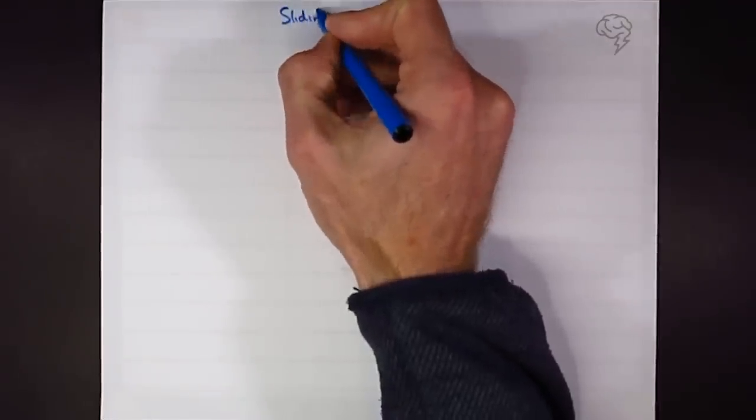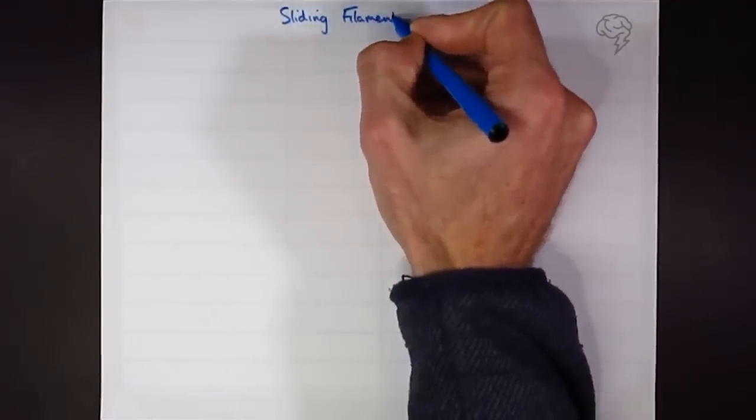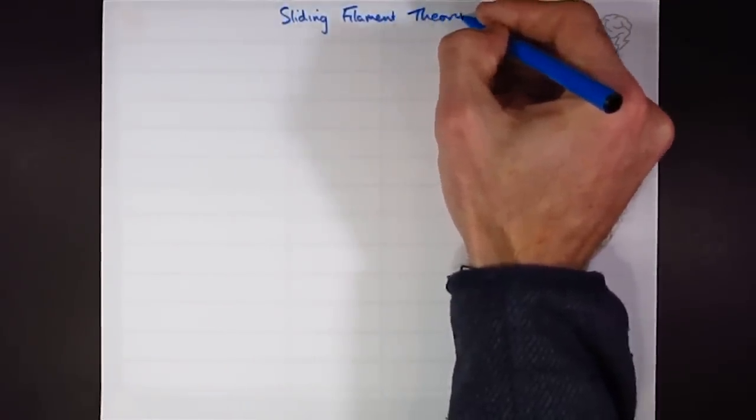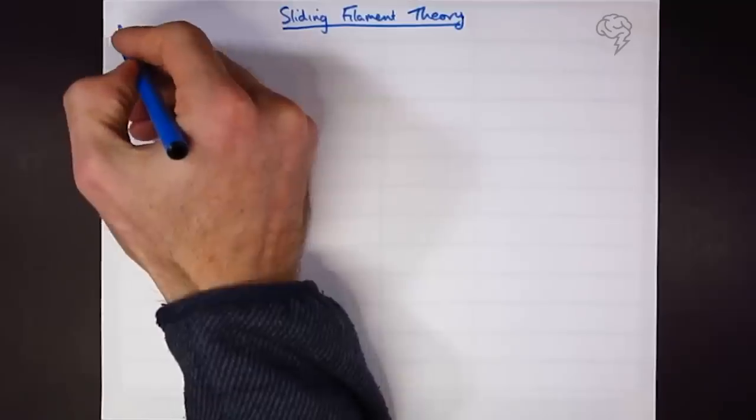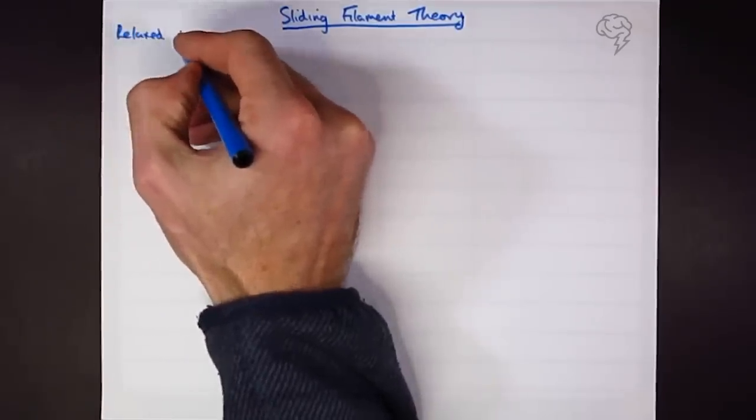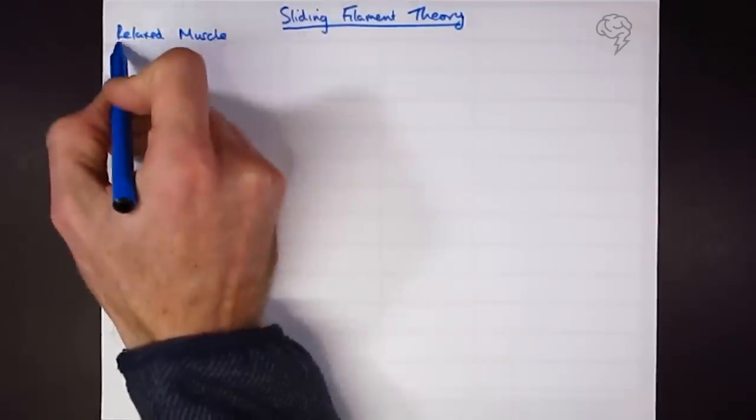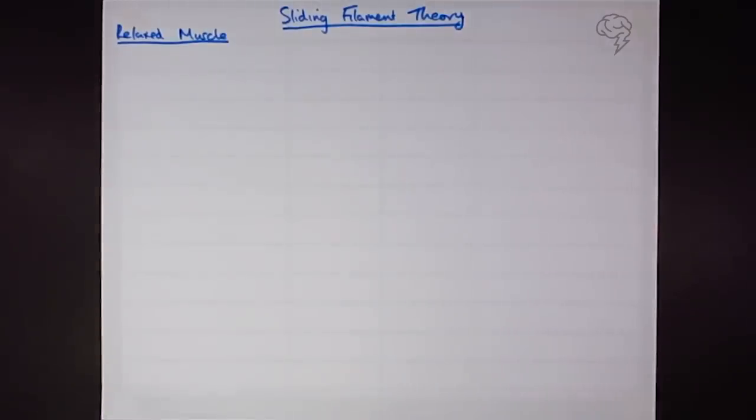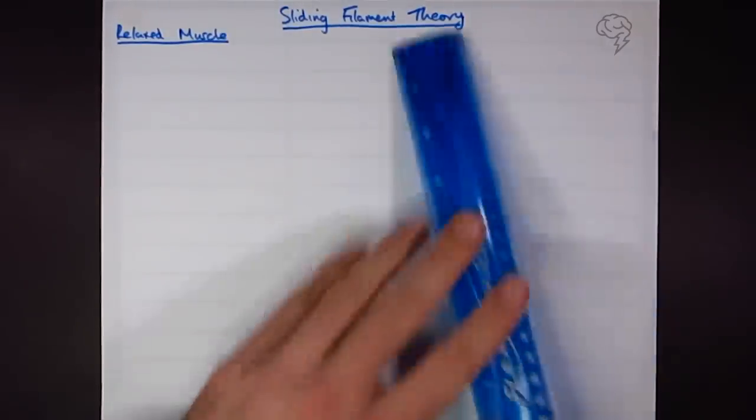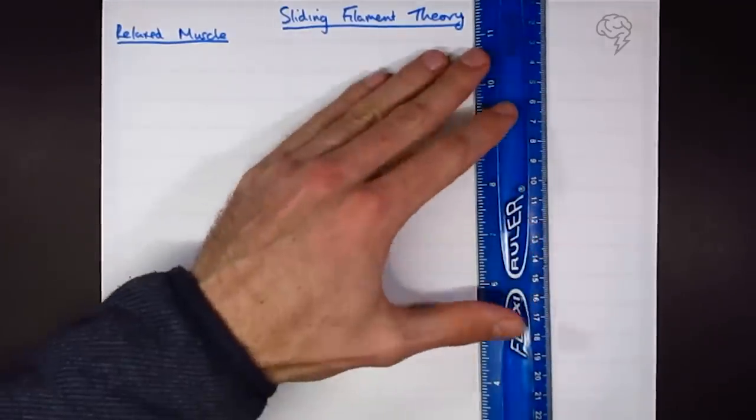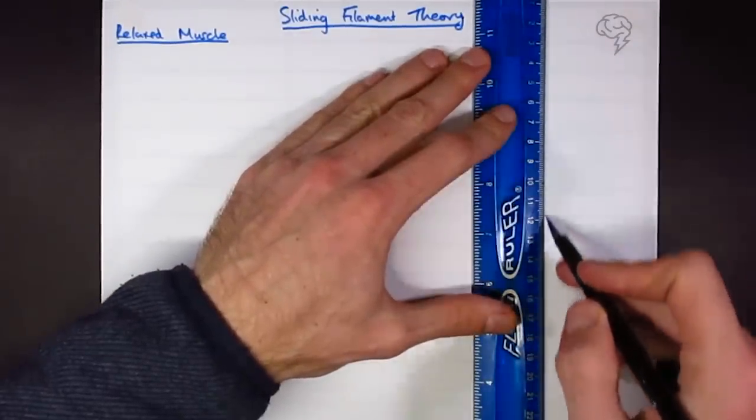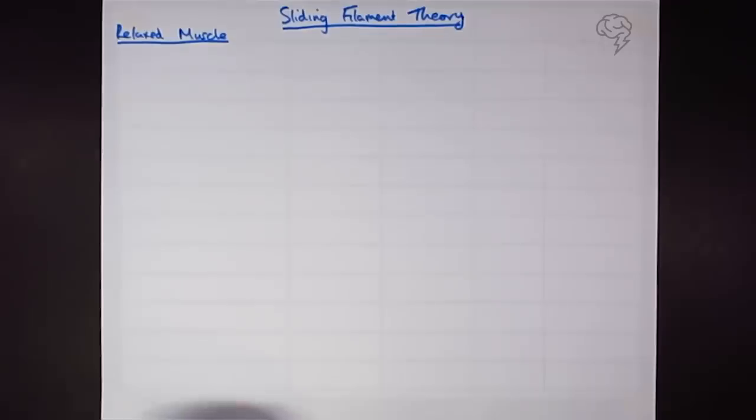Sliding filament theory. First of all we're going to look at a relaxed muscle, and then we're going to look at the changes that take place and how it contracts. I need a little point of reference to be marked on here so I'm going to draw a very faint line straight down the page with a pencil. This line isn't really going to be on our final diagrams but I just need something as a point of reference.